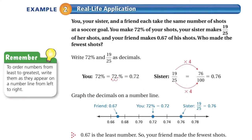For example 2, we have a real-life application. You, your sister, and a friend each take the same number of shots at a soccer goal. You make 72% of your shots, your sister makes 19 out of 25 of her shots, and your friend makes 0.67 of his shots. Who made the fewest shots? First, we write 72% and 19/25 as decimals.